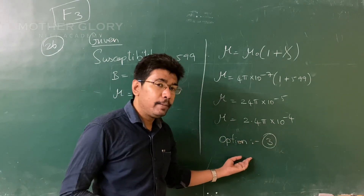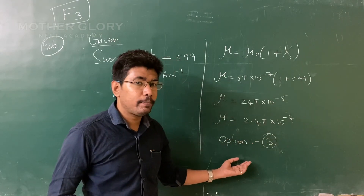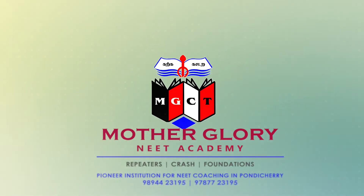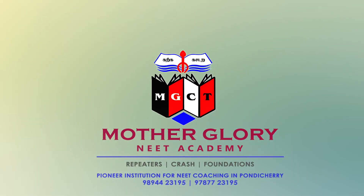The permeability formula is mu equal to mu naught multiplied by 1 plus susceptibility. The constant mu naught value is 4π × 10⁻⁷. So, 4 × 10⁻⁷ multiplied by 1 plus the susceptibility value of 599.